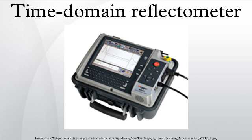Example traces: these traces were produced by a time domain reflectometer made from common lab equipment connected to approximately 100 feet of 50 ohm coaxial cable. The propagation velocity of this cable is approximately 66% of the speed of light in a vacuum.